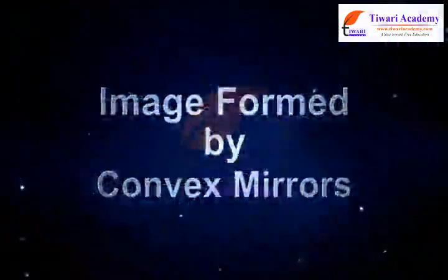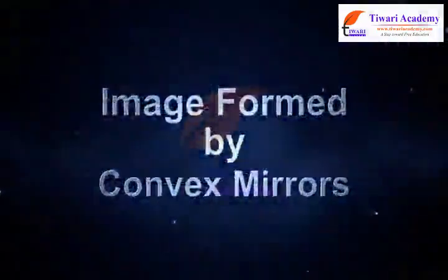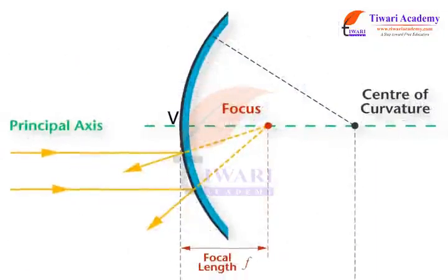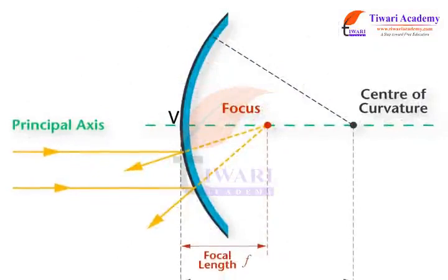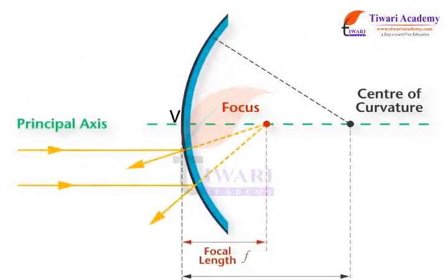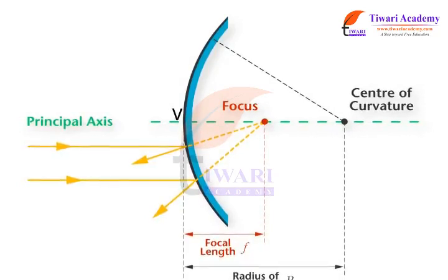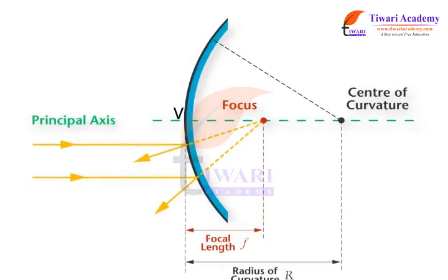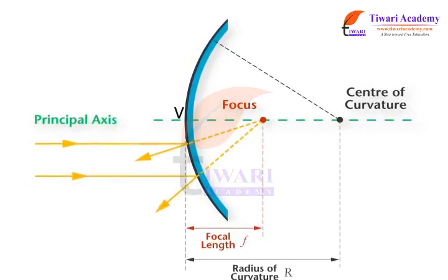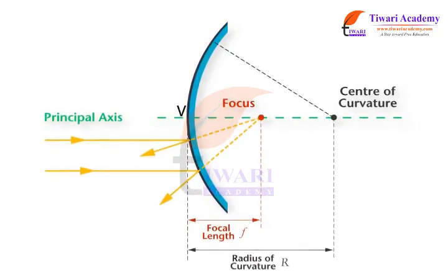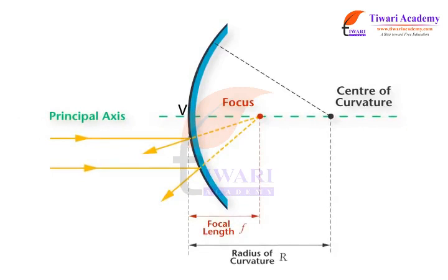Image formed by convex mirrors. The definitions of the principal axis, center of curvature C, radius of curvature R, and the vertex V of a convex mirror are analogous to the corresponding definitions for a concave mirror.